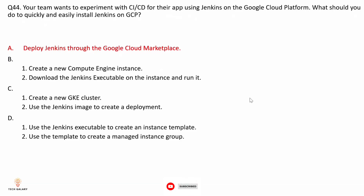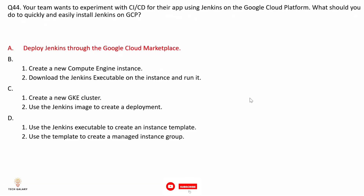Option A: deploy Jenkins through the Google Cloud Marketplace. This is correct because deploying via the GCP Marketplace is the fastest way to deploy Jenkins. Options B, C, and D — creating a Compute Engine instance and downloading the executable, creating a GKE cluster, etc. — are all time-consuming processes. Option A through the Marketplace is the quickest way.